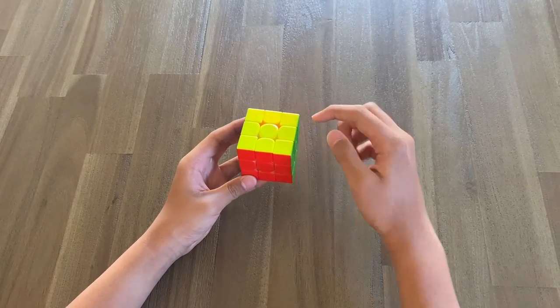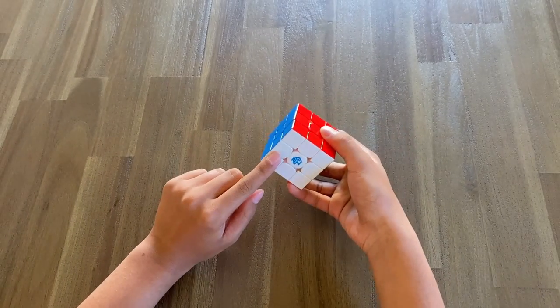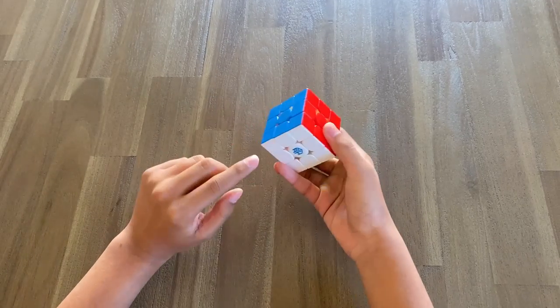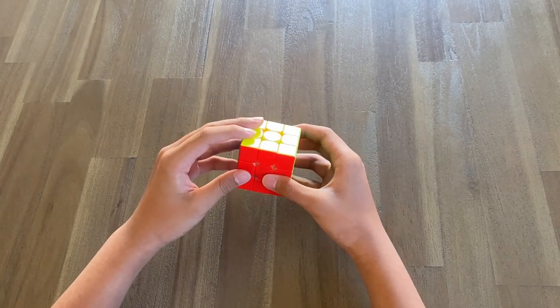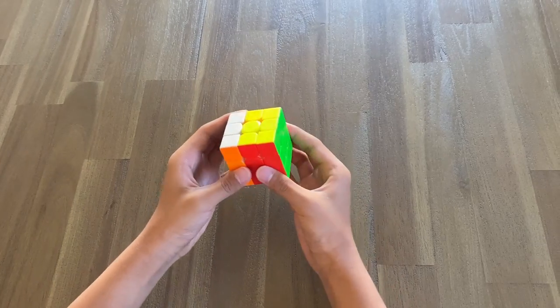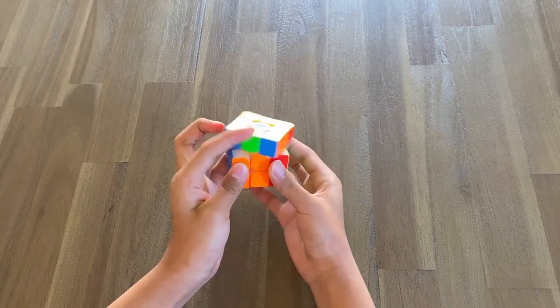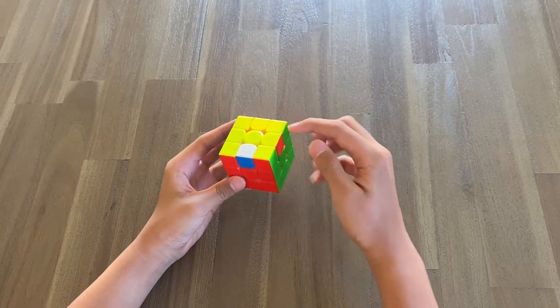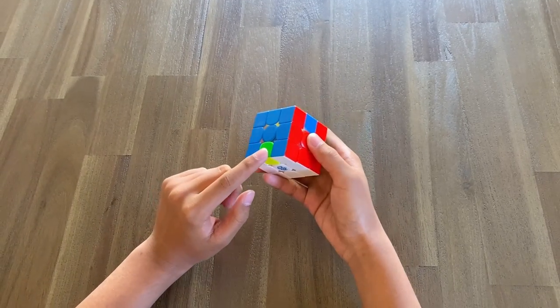Now, what if we want to swap this edge, this edge, and this edge in a counterclockwise cycle? Again, we can move this edge here where it will be executed on. And what we can do is that same U perm. Now, we can move the edge back down. As you can see, these three edges are now swapped.